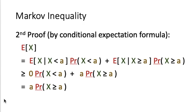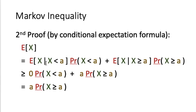For the second proof, we use the conditional expectation formula. We again begin with expected of X, and rewrite it as a weighted sum of conditional expectations. We split the sample space into two subsets: X less than a, and X greater than or equal to a. By the conditional expectation formula, expected of X equals E[X | X < a] times P(X < a) plus E[X | X ≥ a] times P(X ≥ a).